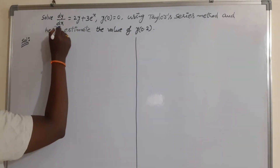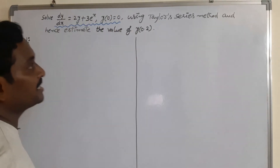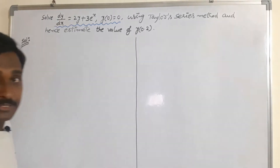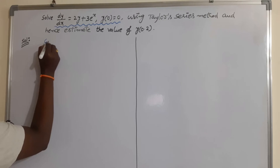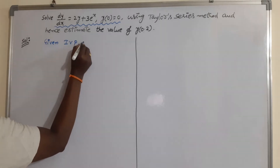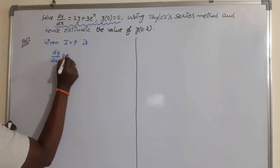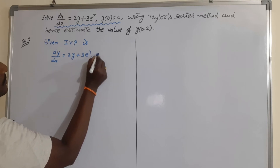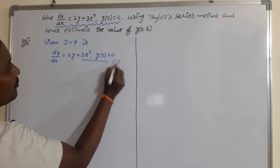First, we have to find the solution of this initial value problem using Taylor series method. In that solution, we have to replace x = 0.2. So write the given initial value problem: dy/dx = 2y + 3e^x, y(0) = 0. Take it as equation number 1.